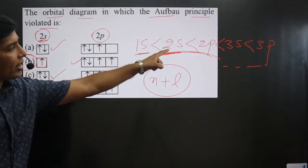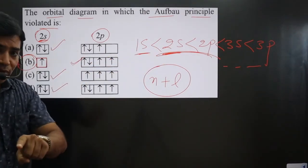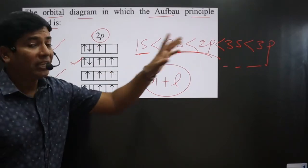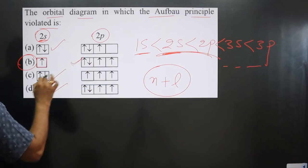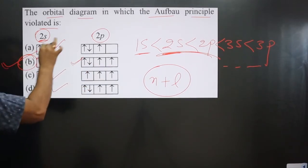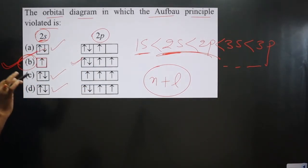Because it says that lower energy orbitals must be filled completely before filling the higher energy orbitals. Then you can see, the filling of electrons in these orbitals in option B is violating Aufbau principle. Option B is correct. If you like this video, please share and subscribe to the channel.